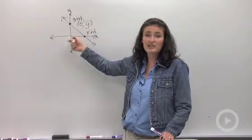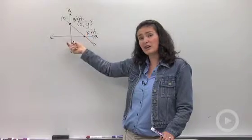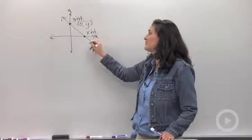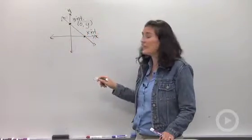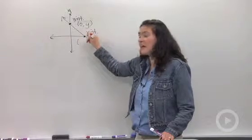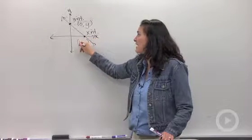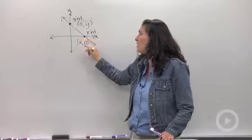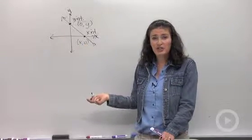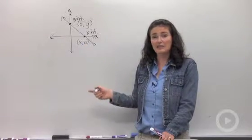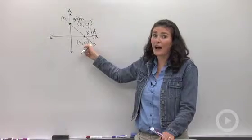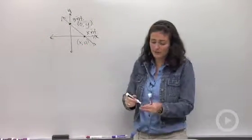So if all you have was an equation, you would substitute in x equals 0 in order to find your y-intercept. Similarly, the coordinates of the x-intercept are going to be some x value, comma 0 for y. So if I have an equation and I'm asked to find the x-intercept, I would plug in y equals 0.